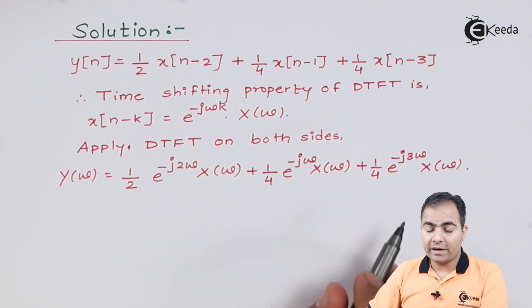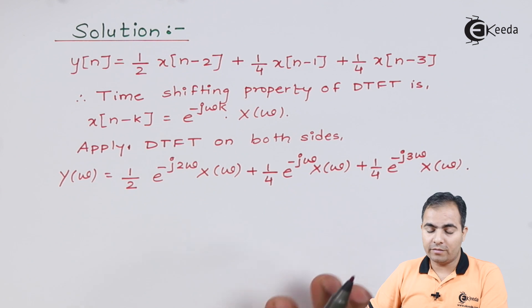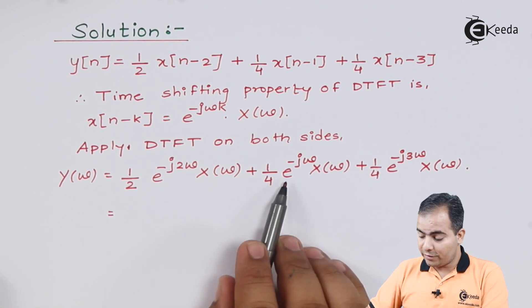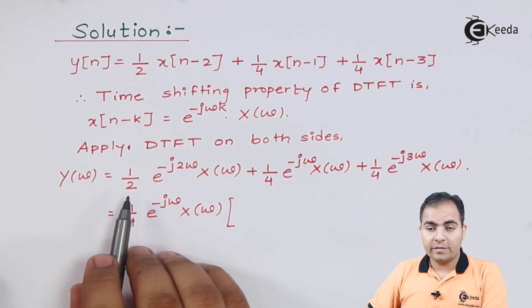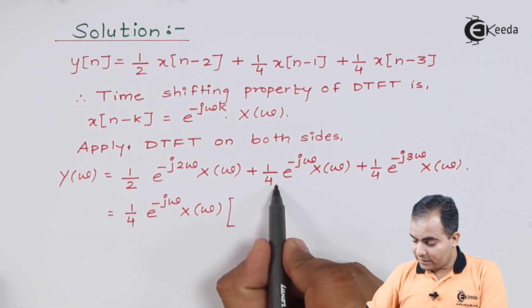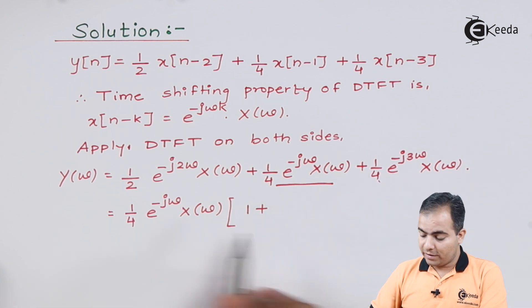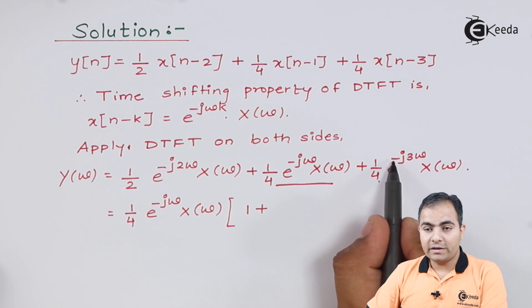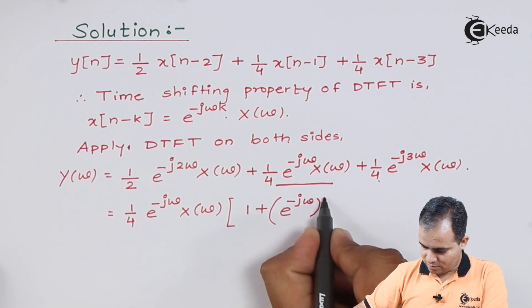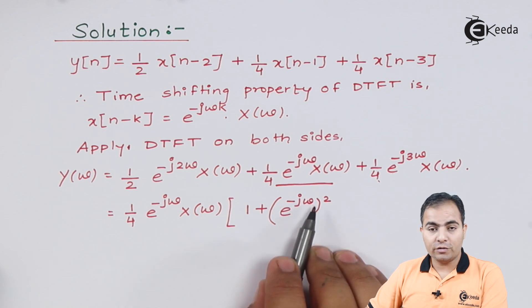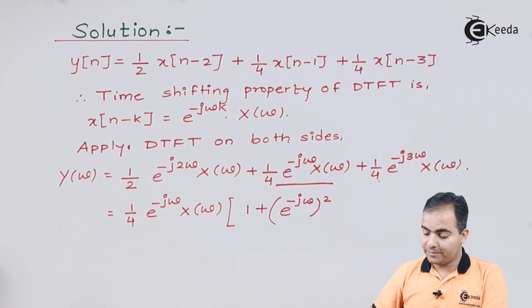From the right-hand side I can take X(ω) common. Along with X(ω) I'll take (1/4)e^(-jω) common. What is remaining inside the bracket: from the first term, having already taken (1/4)X(ω) common, if I take e^(-jω) common the result is e^(-j2ω). I'll write this as e^(-jω) raised to the power 2, because power of a power is always the product: e^(-jω)·2 = e^(-j2ω).